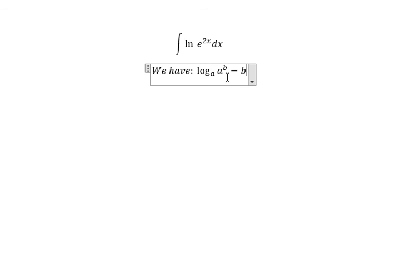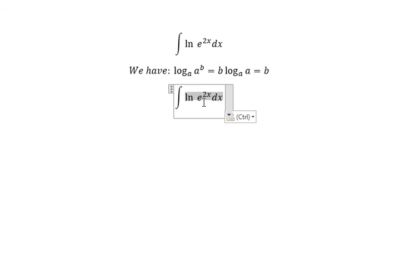We get log base a of a. Log base a of a equals one, so we get b left. That is similar for this problem. We change ln of e to the power of 2x to just 2x.